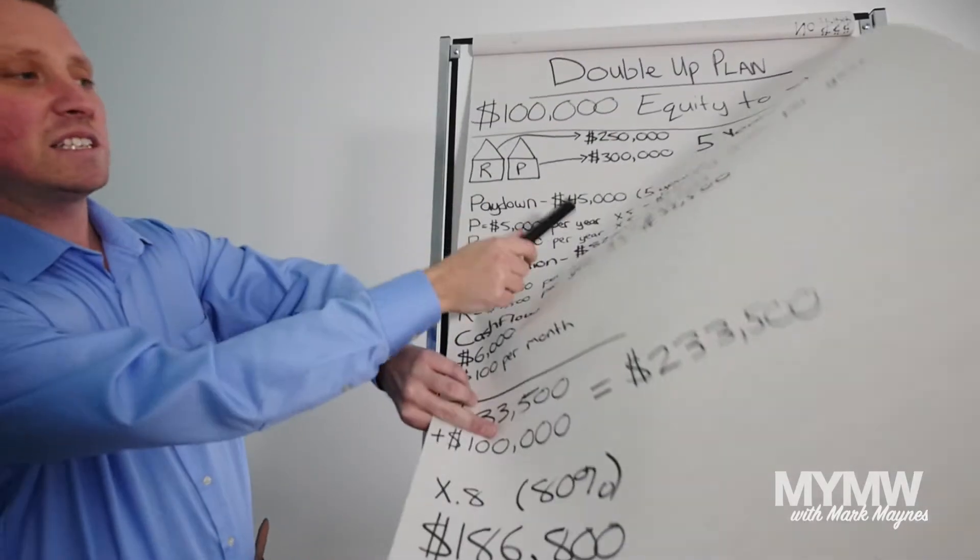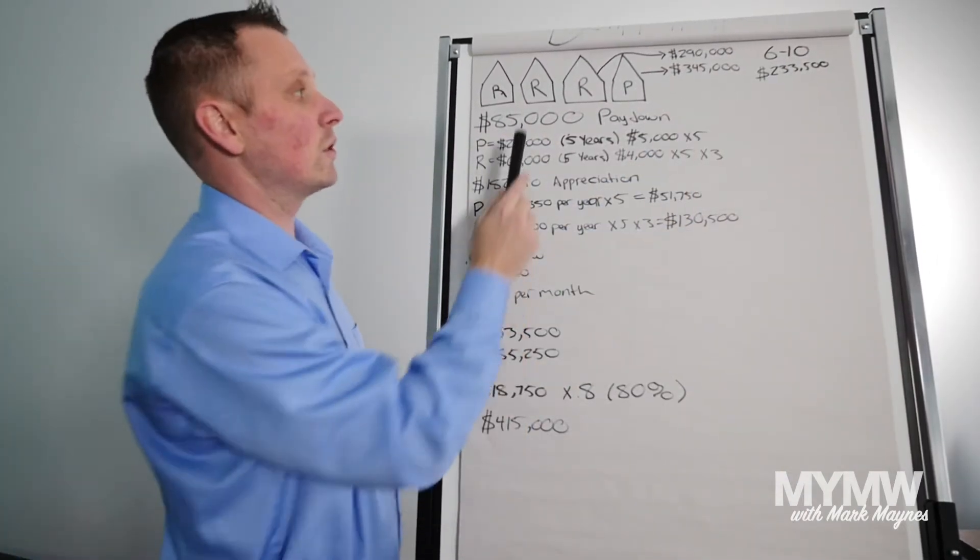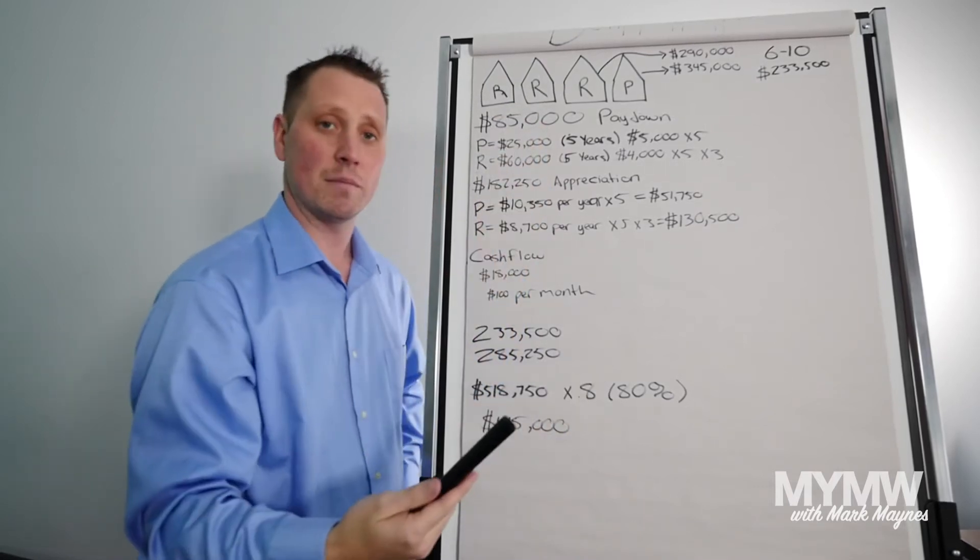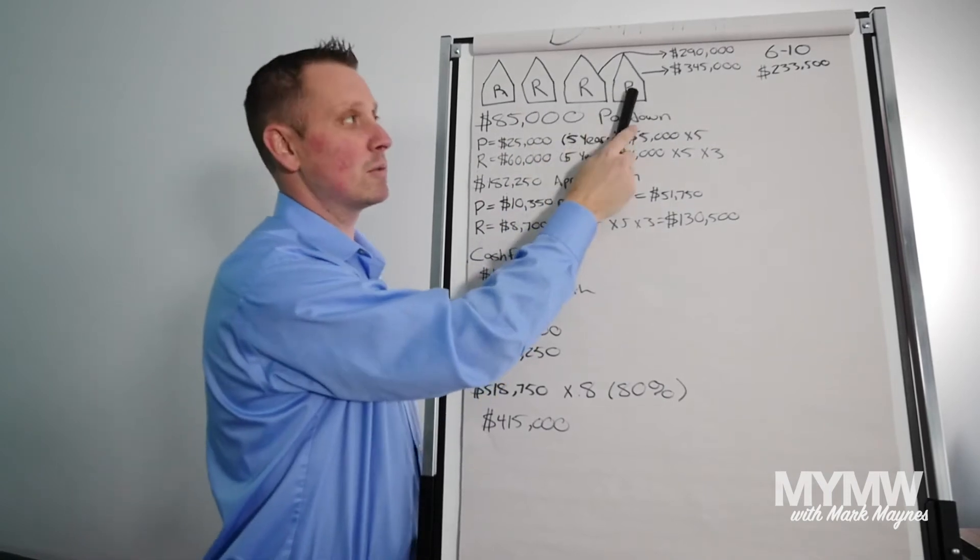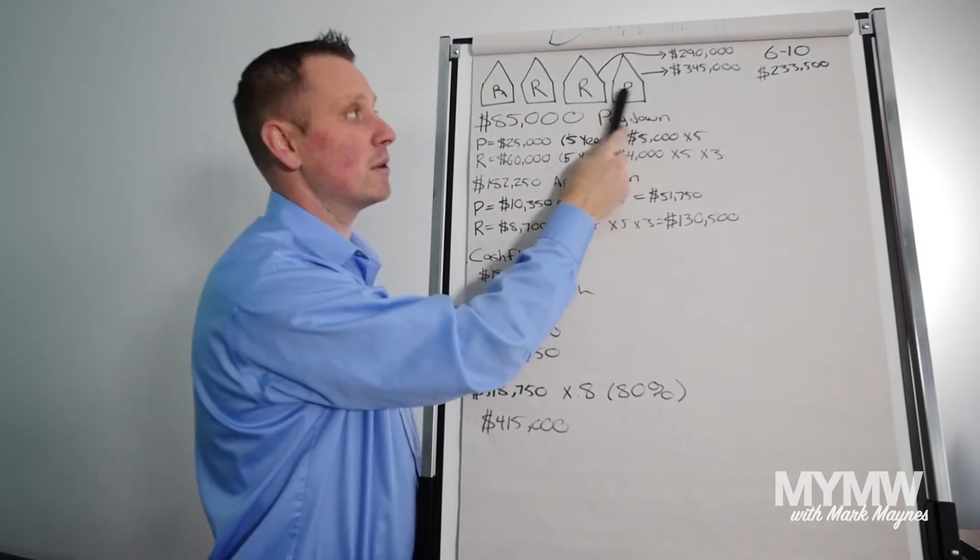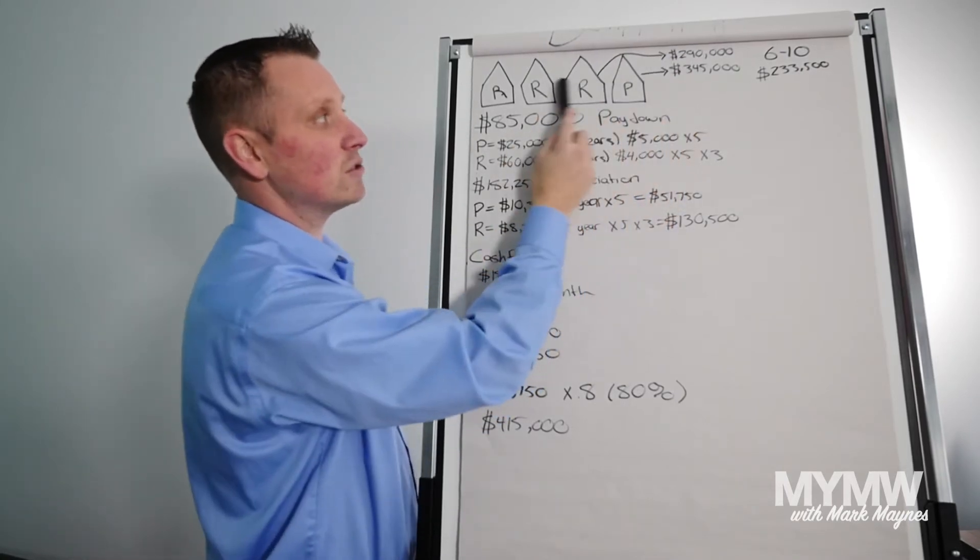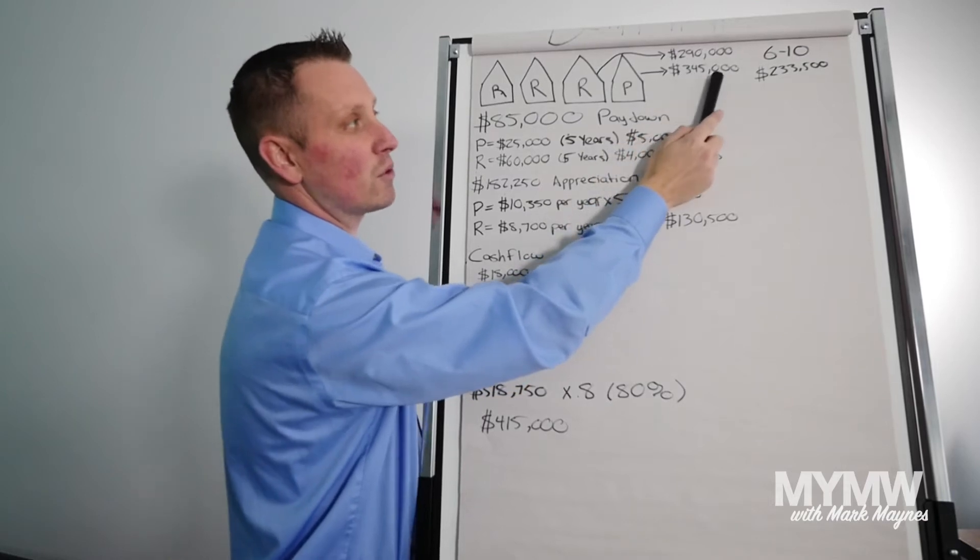So again, this is year one to five. We're now on year six to 10. We're going to now buy two more rental properties because each time we're doubling up. We have the original rental and the original principal residence. So now we have four houses. Because of the appreciation, each one of the rentals are going to be worth $290,000 and the principal is worth $345,000.